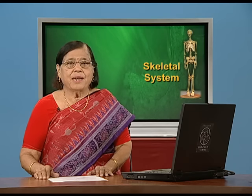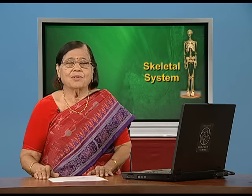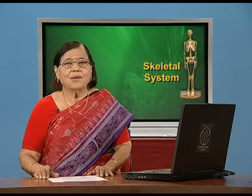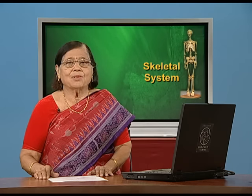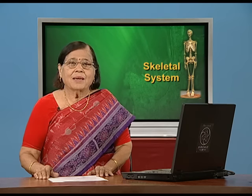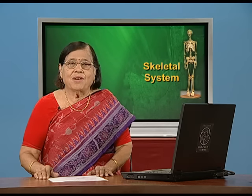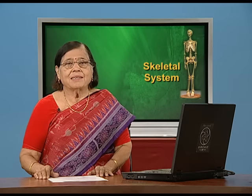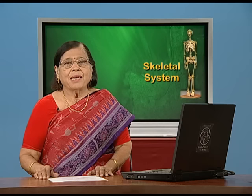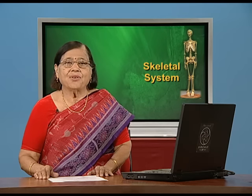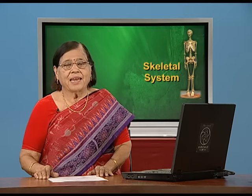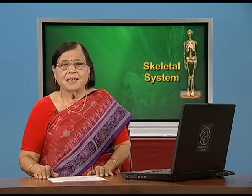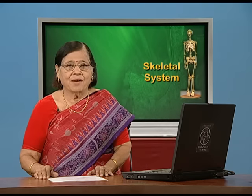In the forelimb — that is, the hand — we discussed all 30 bones. Similarly, in the hind limb bones — that is, the leg bones — we discussed all 30 bones of the leg. Today, we wish to show these bones in the skeleton and also in some models to make you understand their real arrangement in the natural way in our body. Let us now see the skeleton and these bones the way we have them in our body.